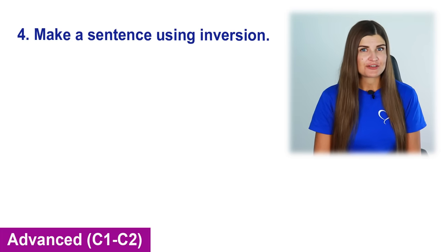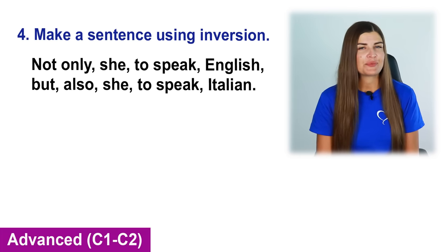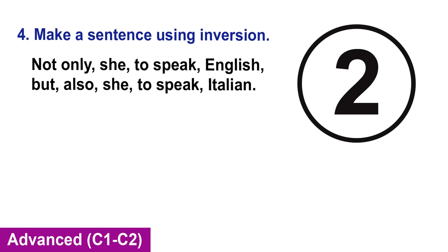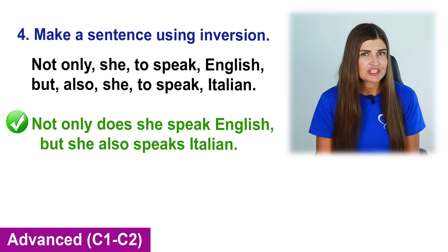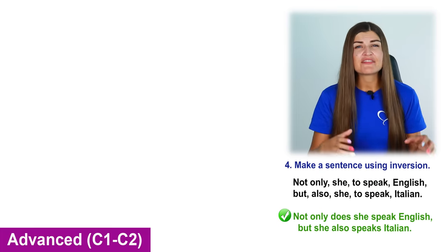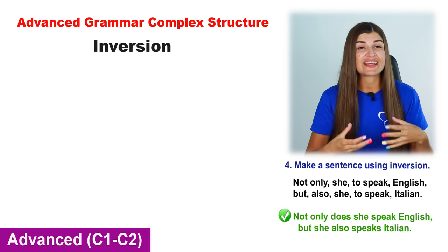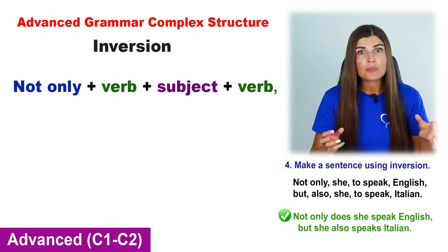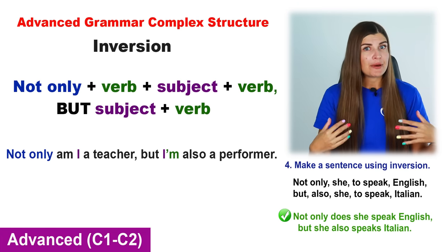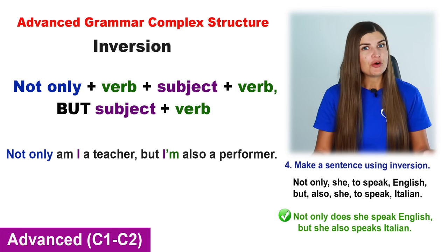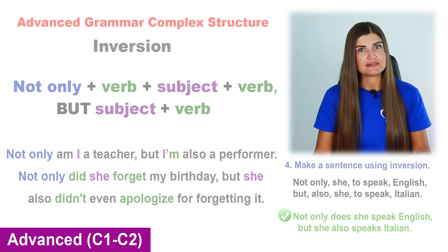Question 4: Make a sentence using inversion. Not only she to speak English but also she to speak Italian. The correct answer is: Not only does she speak English but she also speaks Italian. Here we have an advanced grammar complex structure. Inversion means we have to switch the order of the subject and the verb: not only plus verb plus subject plus verb, but subject plus verb. For example: not only am I a teacher but I am also a performer. Not only did she forget my birthday but she also didn't even apologize.